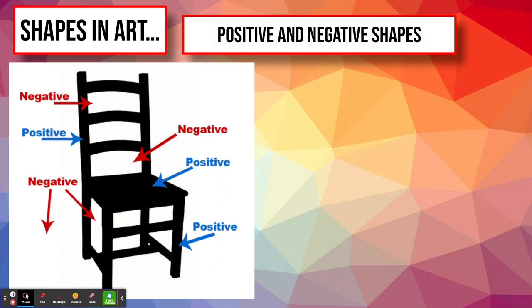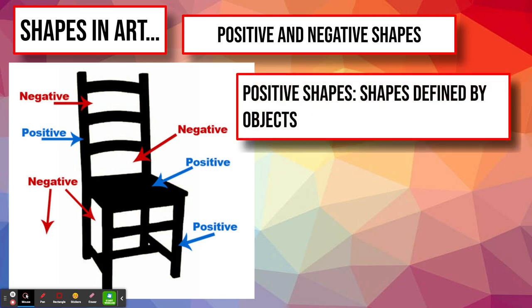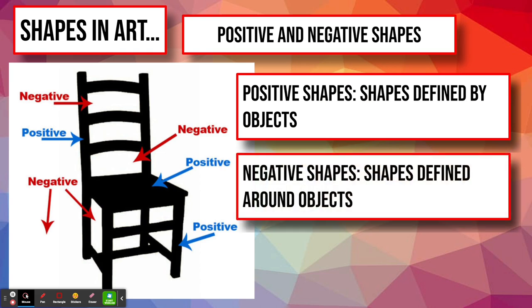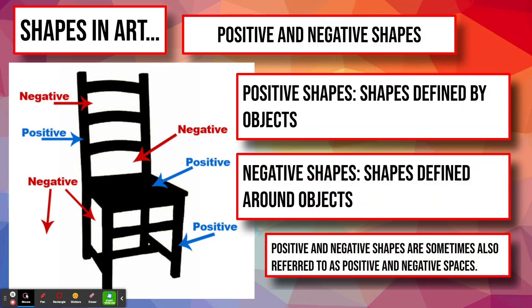Positive and negative shapes: in a picture of a chair, we can understand these terms clearly. Shapes defined by objects are positive shapes. Negative shapes are the shapes defined around objects — so positive shapes are the shapes we see, and negative shapes are the shapes around, in between, and surrounding the positive shapes. Both are equally important in a composition. Both positive and negative shapes are sometimes also referred to as positive and negative spaces, so if you hear those phrases, you can think of them as positive shape or negative shape.